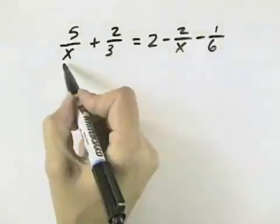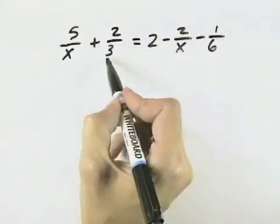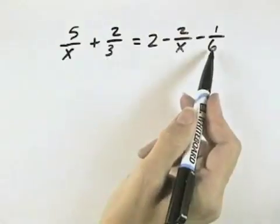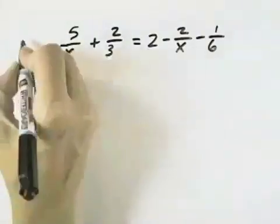In this case, we have a factor of x, a factor of 3, and a factor of 6. Well, 6 contains a factor of 3, so there's just an additional factor of 2. So a 6 and an x would satisfy all of these denominators.